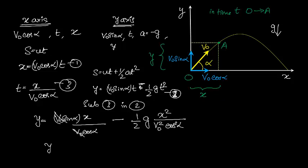I get a tan here. So I get Y equals tan alpha into X minus half G X squared divided by V0 cos alpha whole squared.